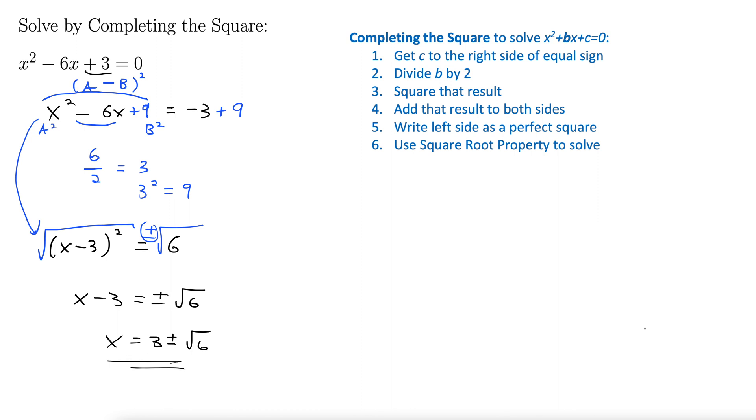Completing the square — note that there are actually two answers: 3 plus √6 and 3 minus √6. It looks nice.